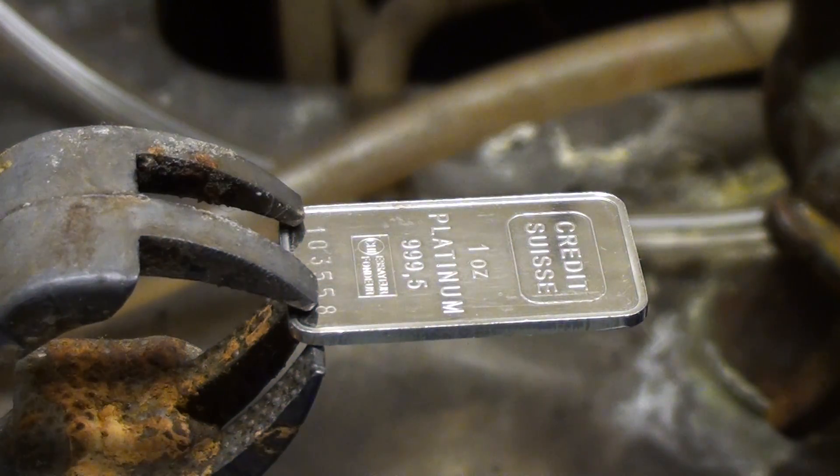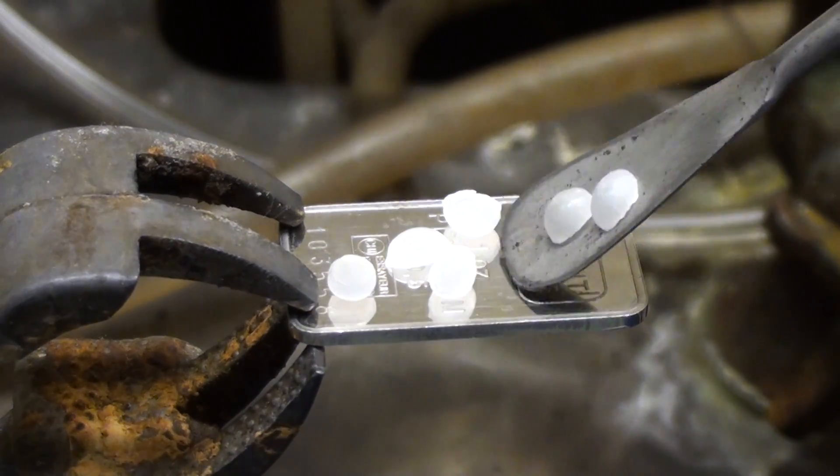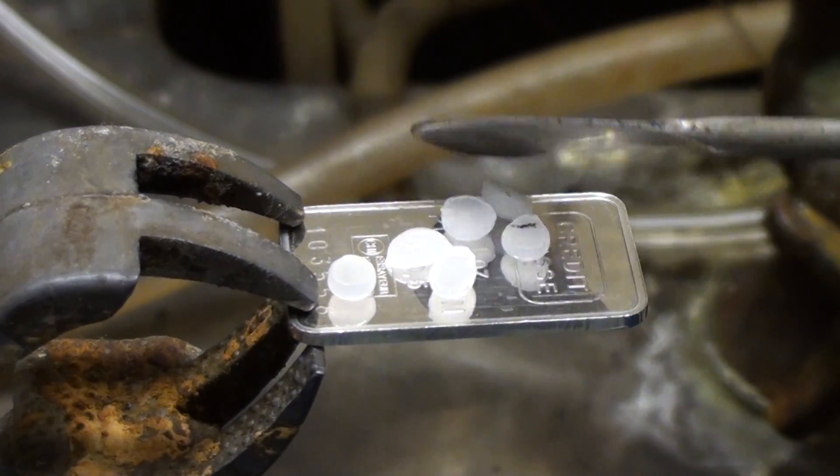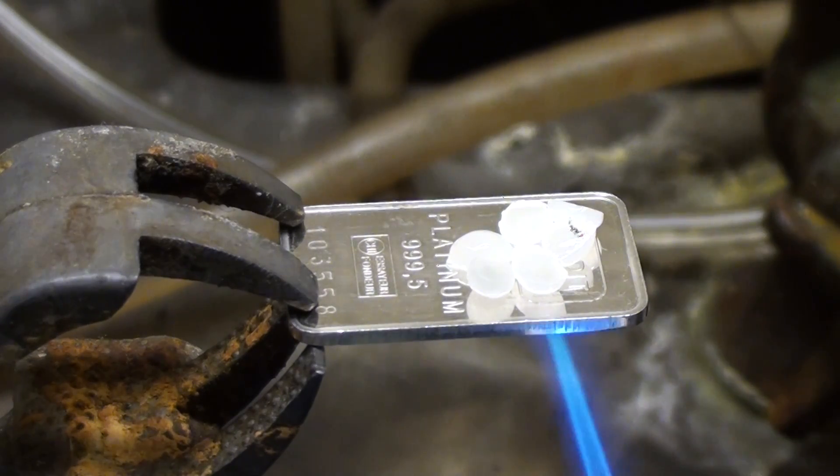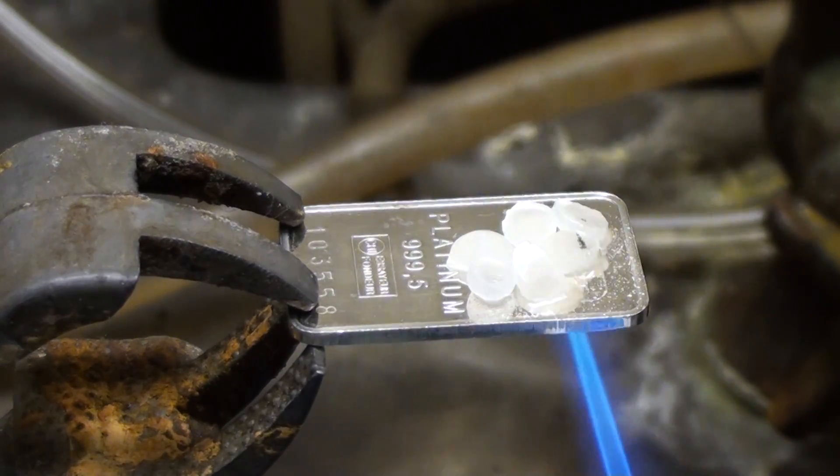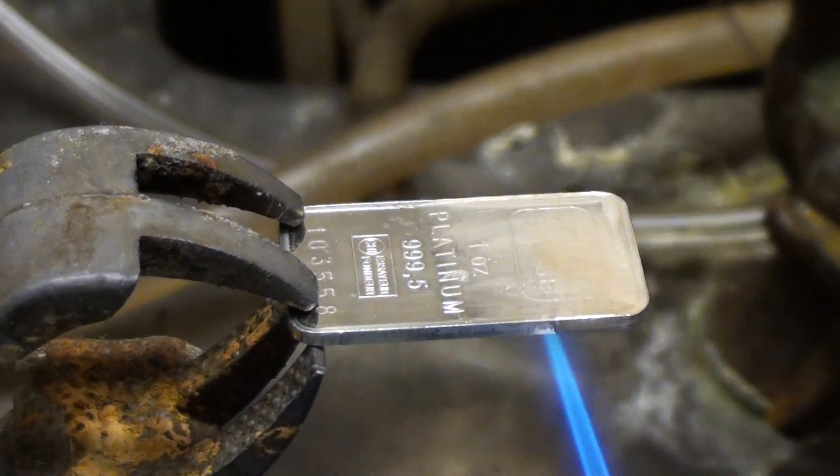Now for the reaction with molten sodium hydroxide. I'm putting these pellets on the surface and now I'm going to heat it with a torch. The sodium hydroxide is melting and as I continue heating it, oh look, it's turning brown.